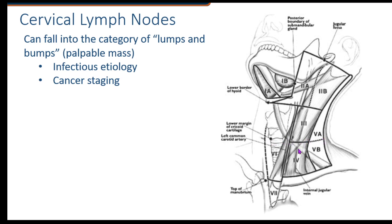Below that is going to be our level four. These are the main areas you're going to be looking at when you are scanning. There are additional levels. If we go into the posterior triangle, we're looking at level five. If we look along the central trachea, we're looking at level six. And then down by the jugular notch, we're looking at level seven.